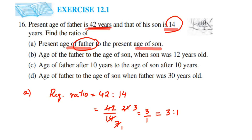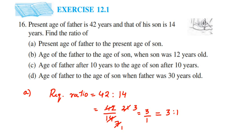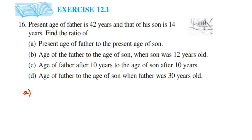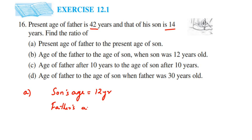The second question asks for the age of father to the age of son when the son was 12 years old. We know that when the son was 14 years his father was 42. Now we have to find out what the father's age will be if the son's age is 12 years — that is 2 years less. So from 42 I subtract 2 years which gives 40. So when the son was 12 years, the father's age is 40 years.